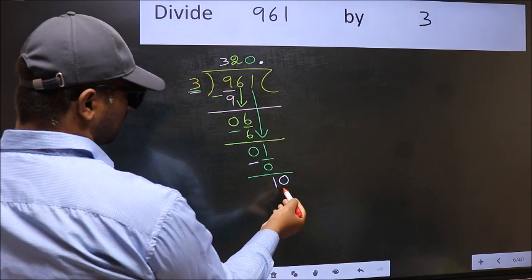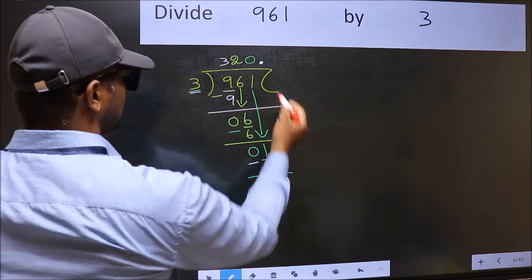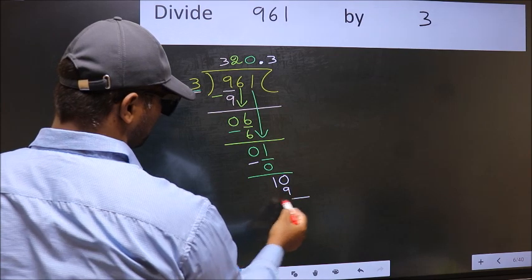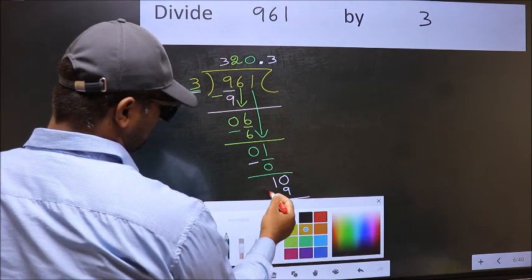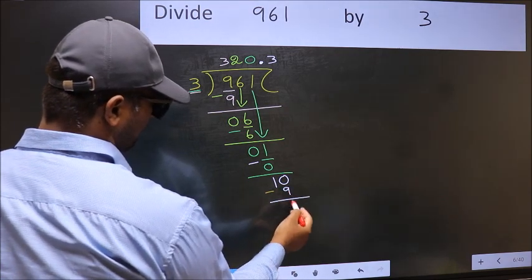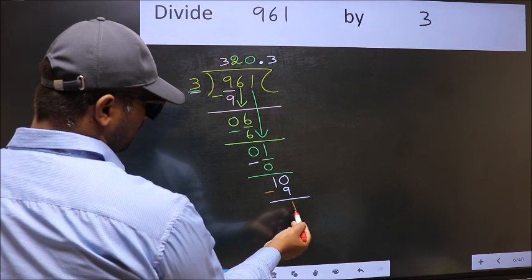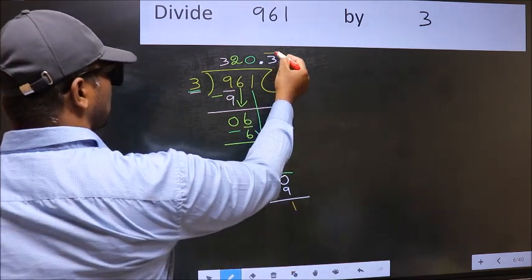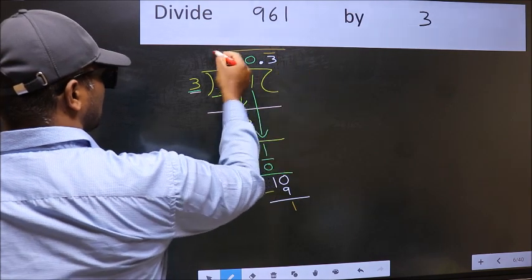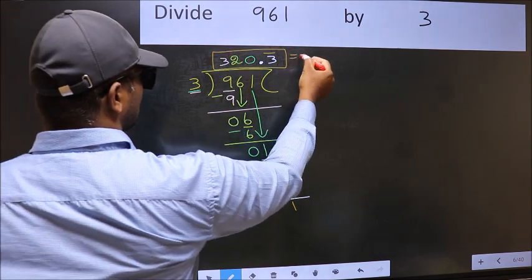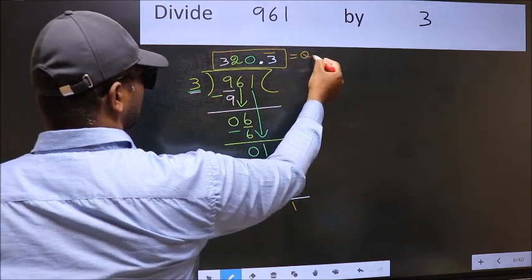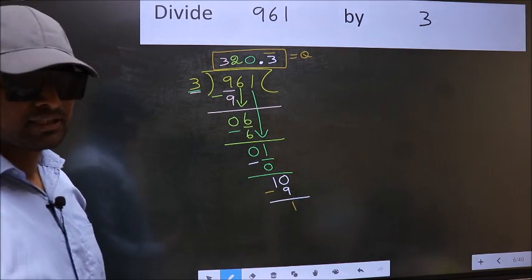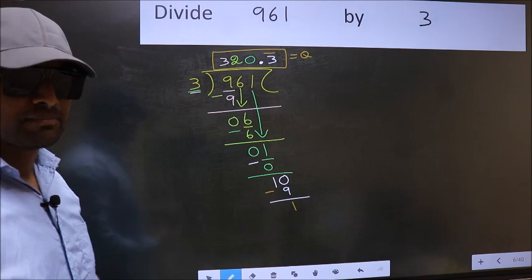So now you can put a dot and take 0. So 10. A number close to 10 in 3 table is 3 3's, 9. Now you should subtract. 10 minus 9 is 1. We got 1 again. That means we get a bar on this number. So this is our quotient. Did you understand where the mistake happens? You should not do that mistake.